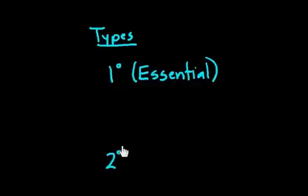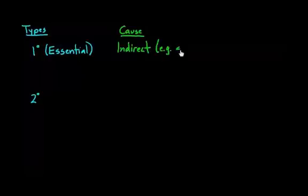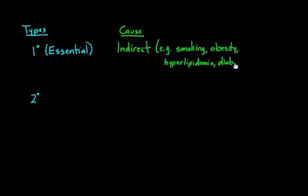Primary hypertension is caused by something indirect. So what does that mean exactly? I'll give you some examples of what the indirect cause could be. It could be something like smoking, or it could be that someone has obesity or is obese, or it could be that they have hyperlipidemia, meaning they have lots of fats floating around in the blood. Or let's say they have diabetes. These are all risk factors, general risk factors for having hypertension.